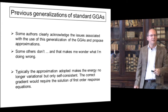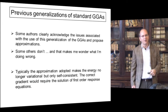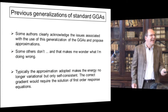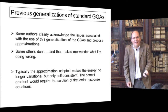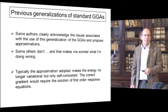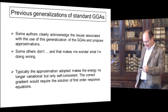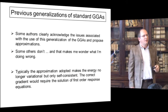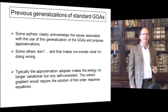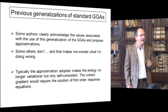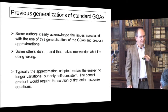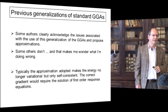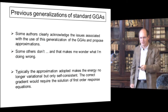Many authors acknowledge these issues with GGAs; they propose approximations and are very clear in their papers about what they are doing — some others are not. If you do one of these approximations, typically you achieve self-consistency but not a variational minimization. That means if you want to compute gradients in the presence of a self-consistent but not truly variational solution, you would have to solve the response equations to do the gradient, and this is also a big problem.